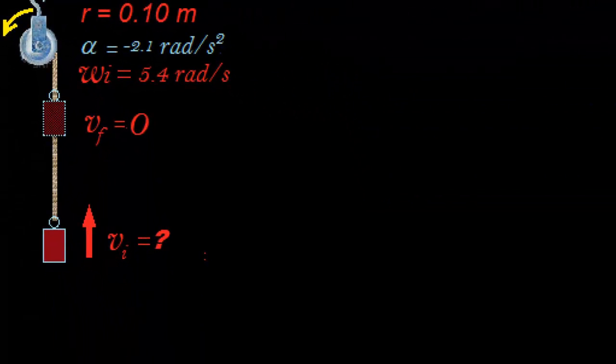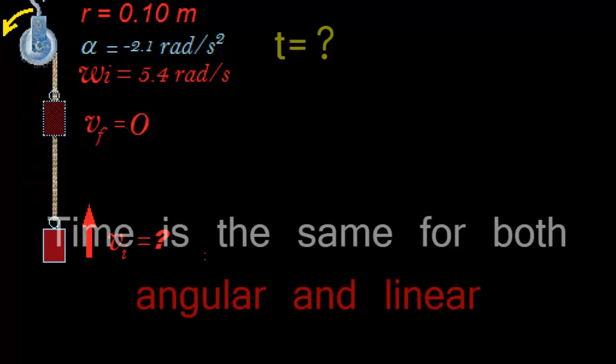The weight attached to a pulley, which is turning at an acceleration of negative 2.1 radians per second squared. It's negative because it's slowing down. Its initial angular velocity is 5.4 radians per second. Its final, both its angular and linear velocity, is 0. How long would it take the pulley to stop?